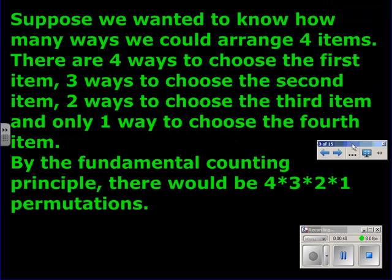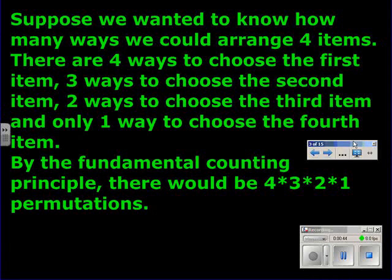Suppose we want to know how many ways we could arrange four items. There are four ways to choose the first item, three ways to choose the second item, two ways to choose the third item, and only one way to choose the fourth item. By the Fundamental Counting Principle, there would be 4 times 3 times 2 times 1 permutations.